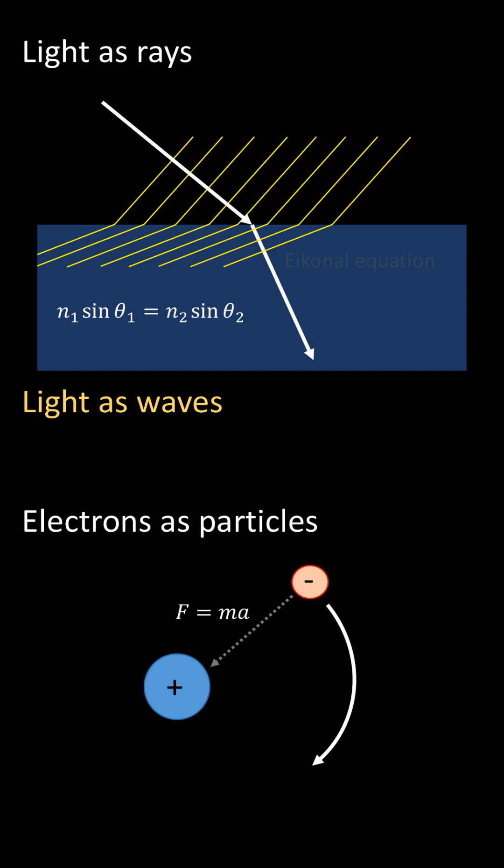This is the Eikonal equation. Similarly, from Newton's law we can infer an equation for how a particle's wavefronts would propagate. This is the Hamilton-Jacobi equation, and it describes the wavefronts of Schrödinger's wavefunction.